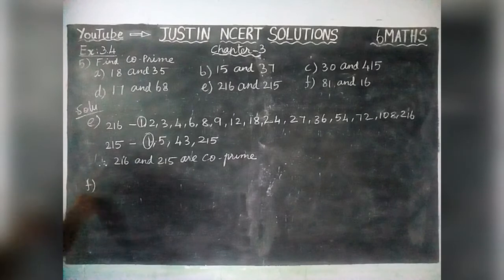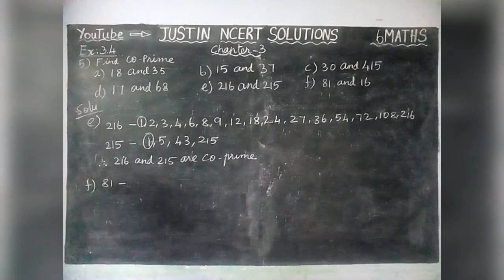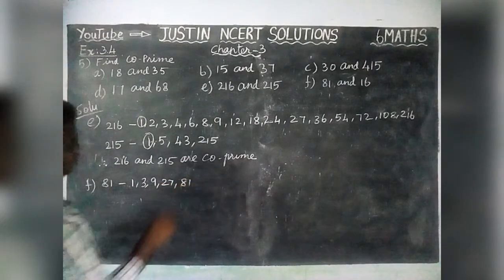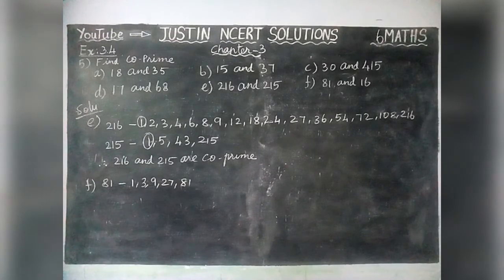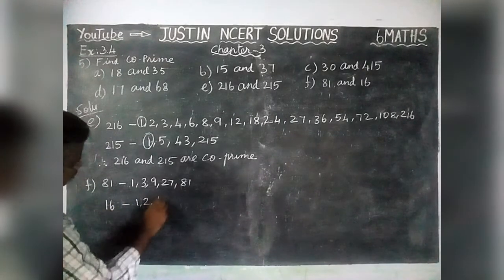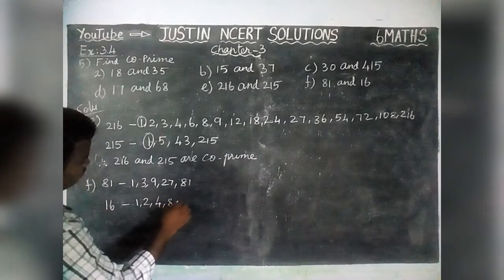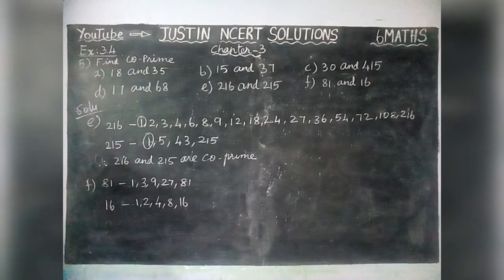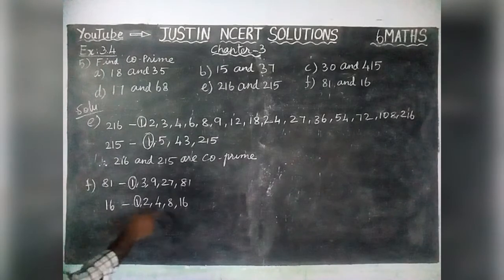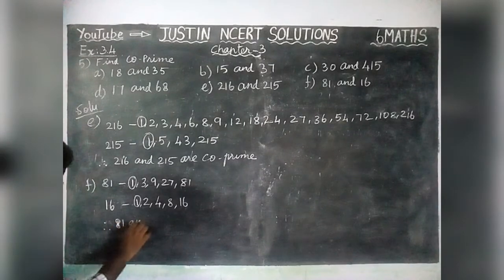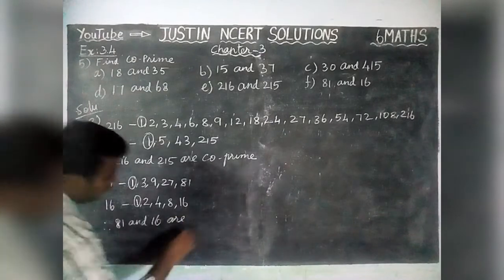Option F: Factors of 81 are 1, 3, 9, 27, and 81. Factors of 16 are 1, 2, 4, 8, and 16. The common factor is only 1, and we don't have any other common factors. Therefore, 81 and 16 are co-prime.